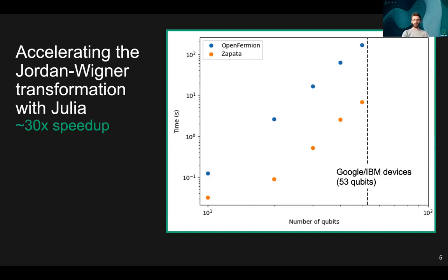Here you can see the performance of the Julia implementation developed at Zapata compared to a state-of-the-art Python implementation that's widely used in the quantum community. You can see that the Julia implementation is about 30 times faster.